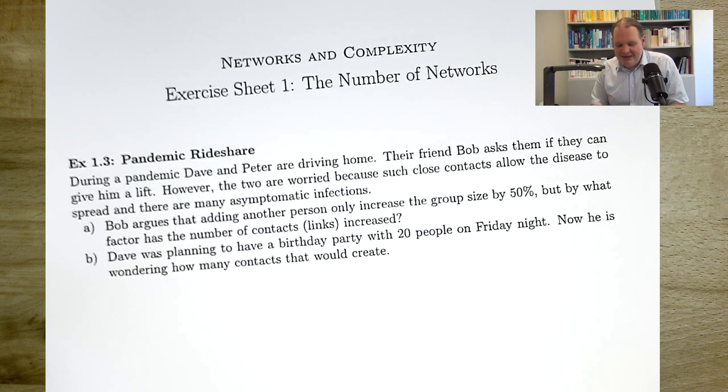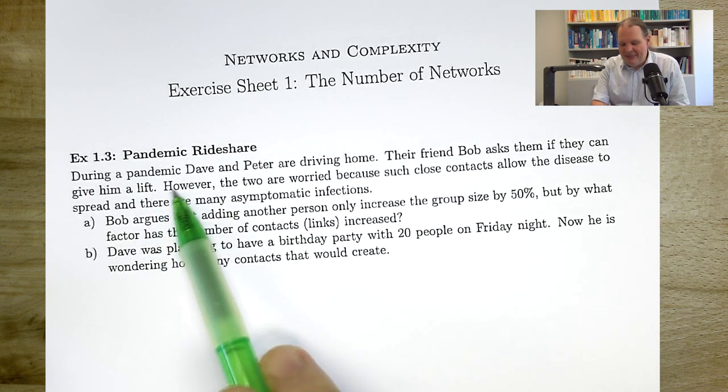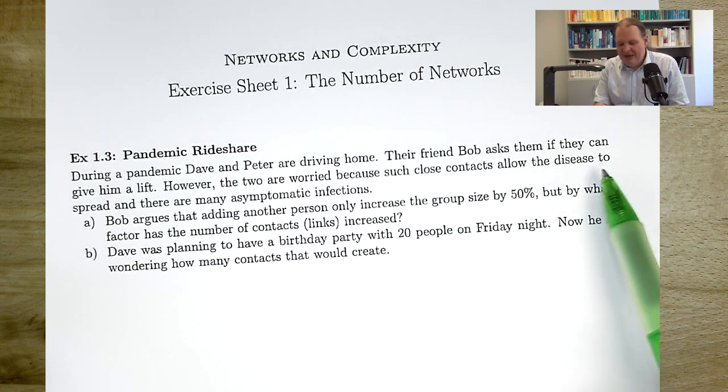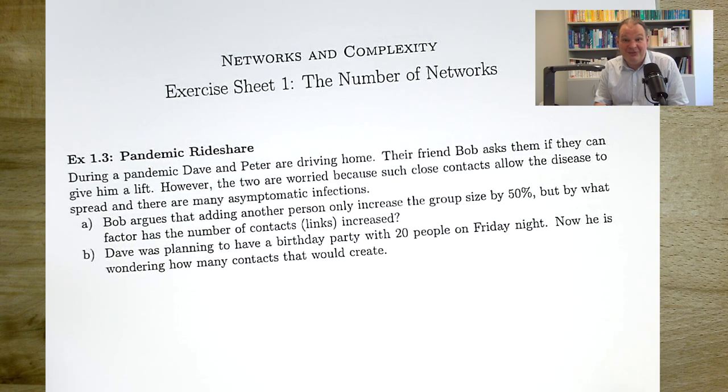So here, this is an applied question. The famous pandemic rideshare question. Well, during a pandemic, Dave and Peter are driving home. Their friend Bob asks them if they can give him a lift. However, the two are worried that because such close contacts spread the infection, this might create a risk for them or for Bob or for everybody involved. Bob argues that another person in the car only increases the size of the group by 50%. Right, we can agree with this, right? From two people to three people, that's a 50% increase in the number of riders. But how much does the number of contacts increase? If you want to try to work it out yourself, now is your chance to pause the video.